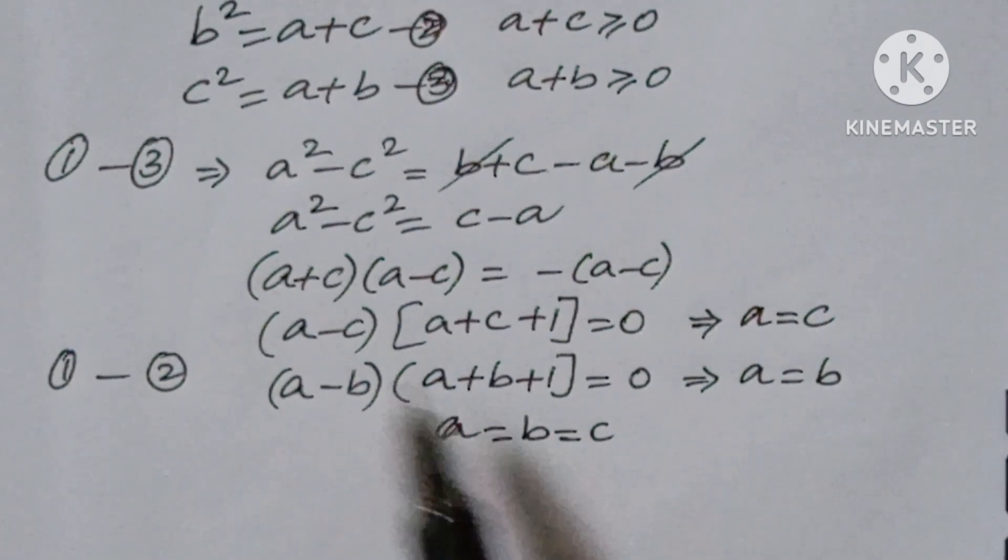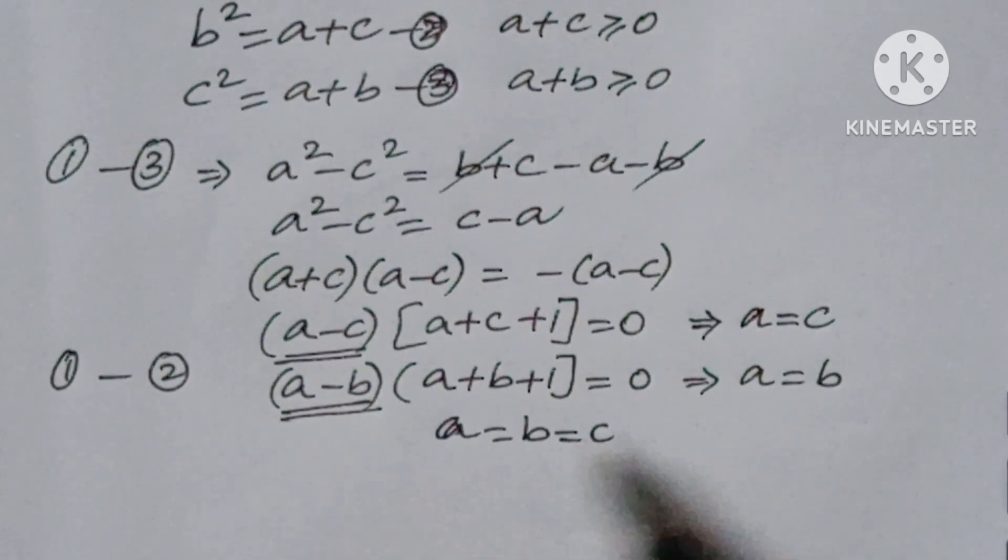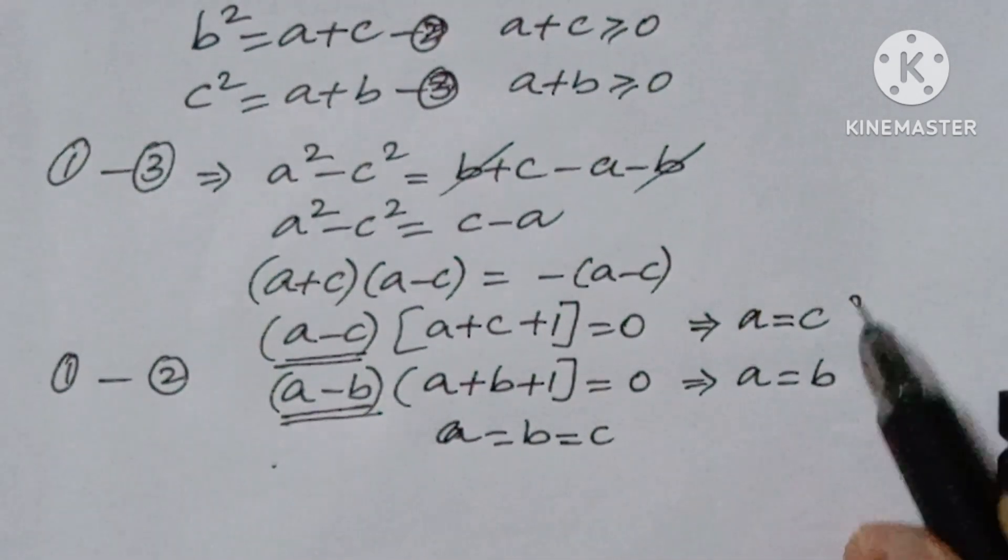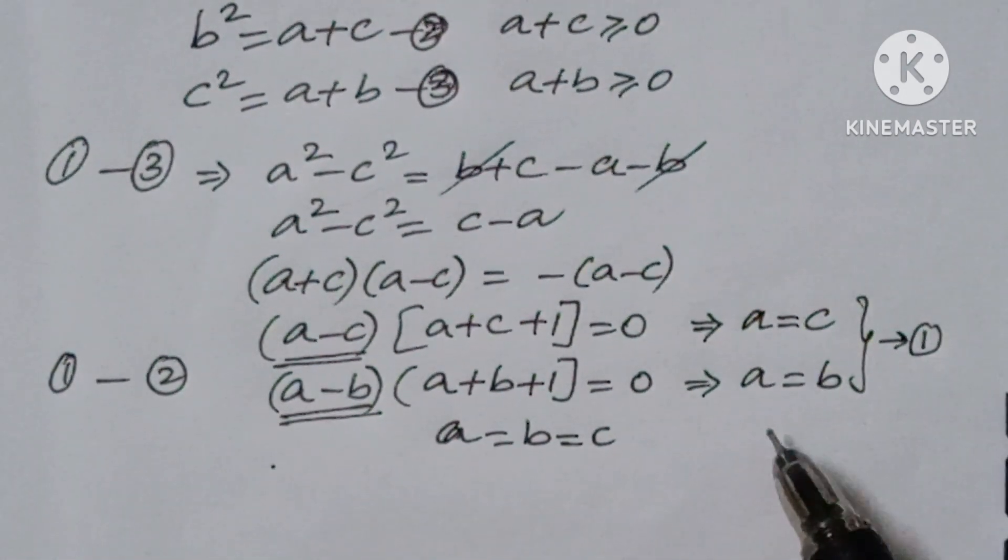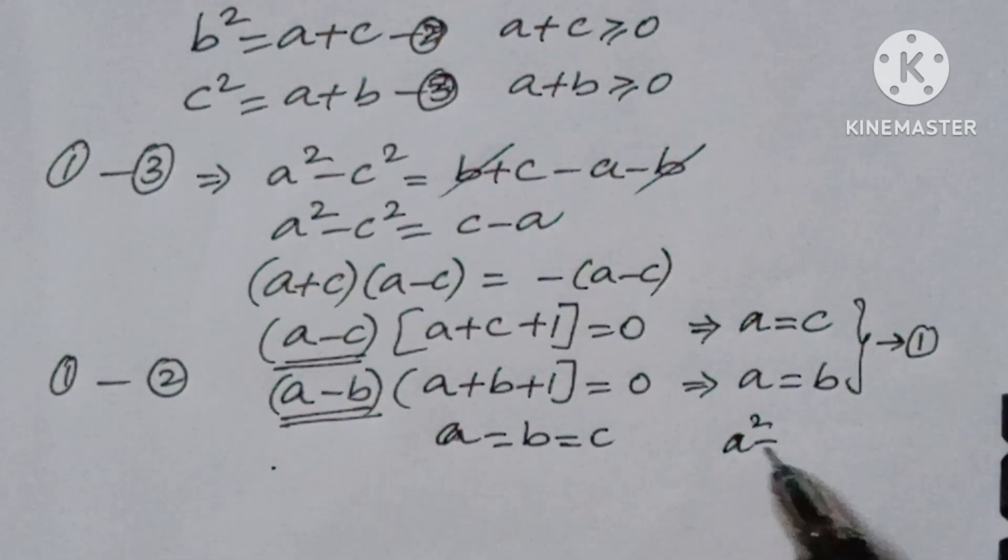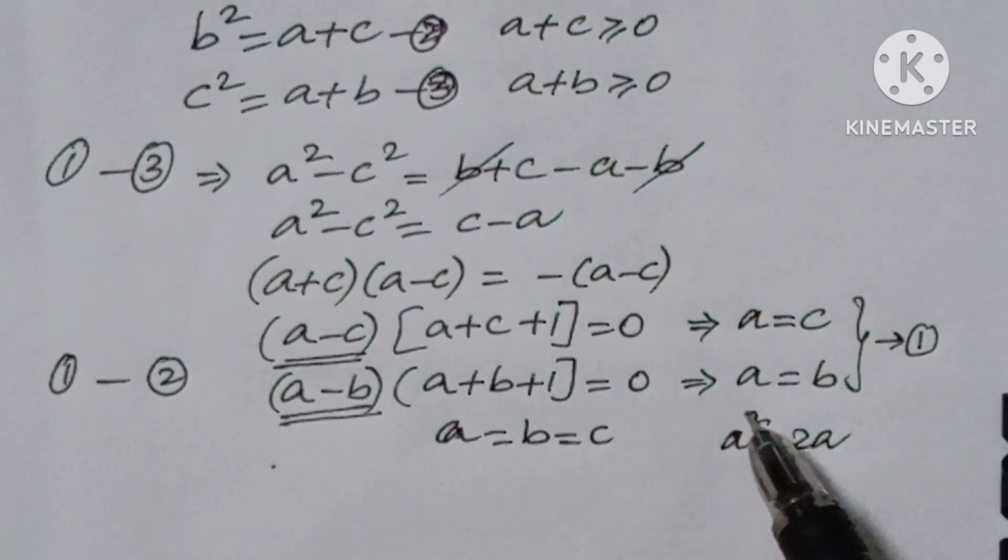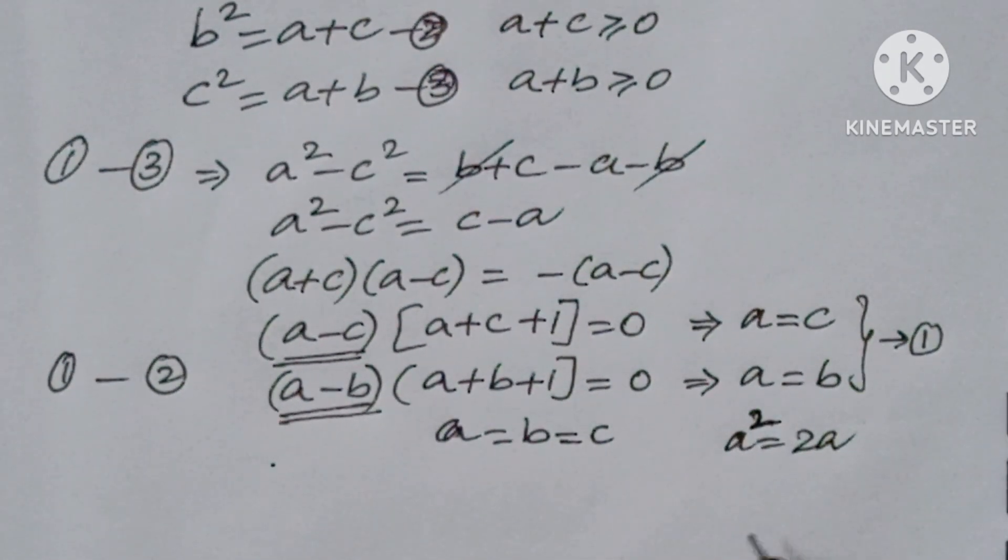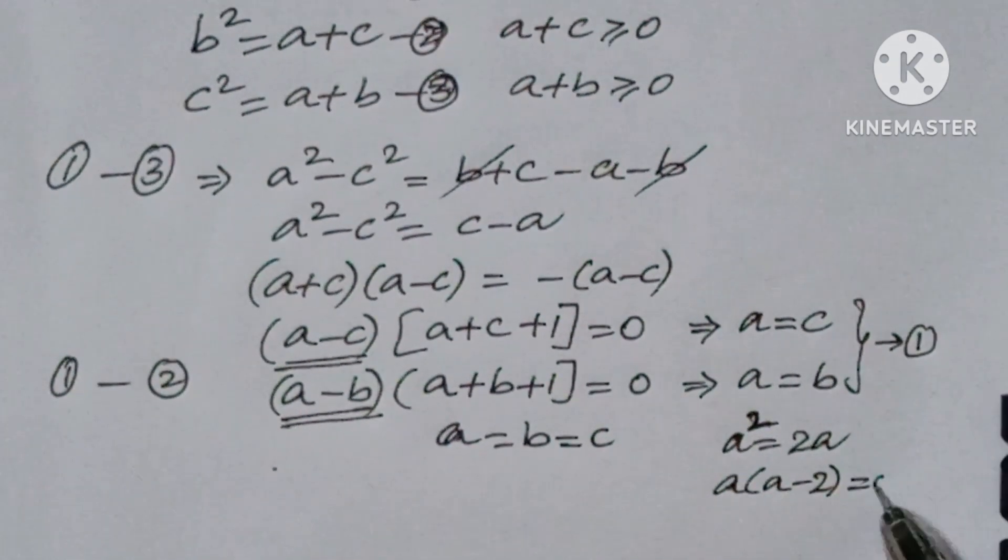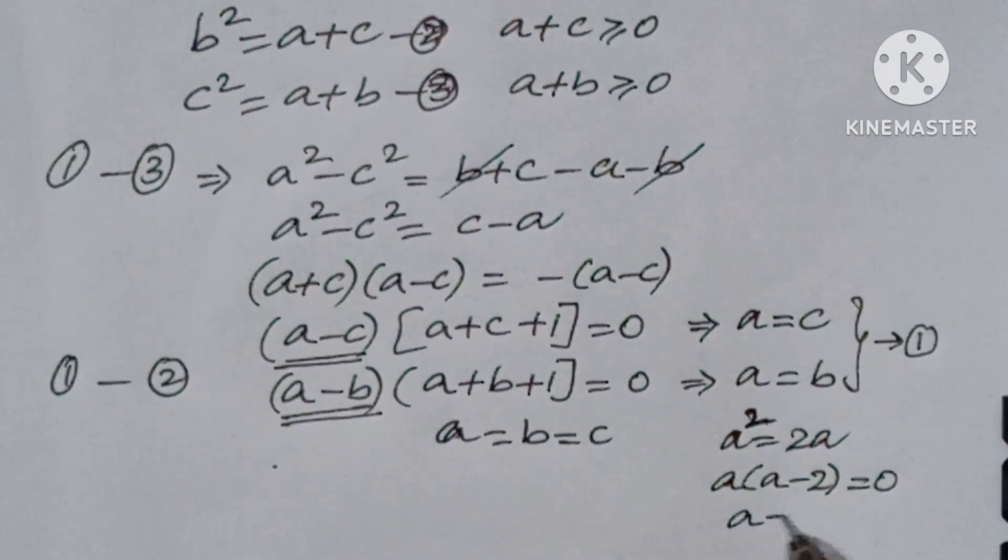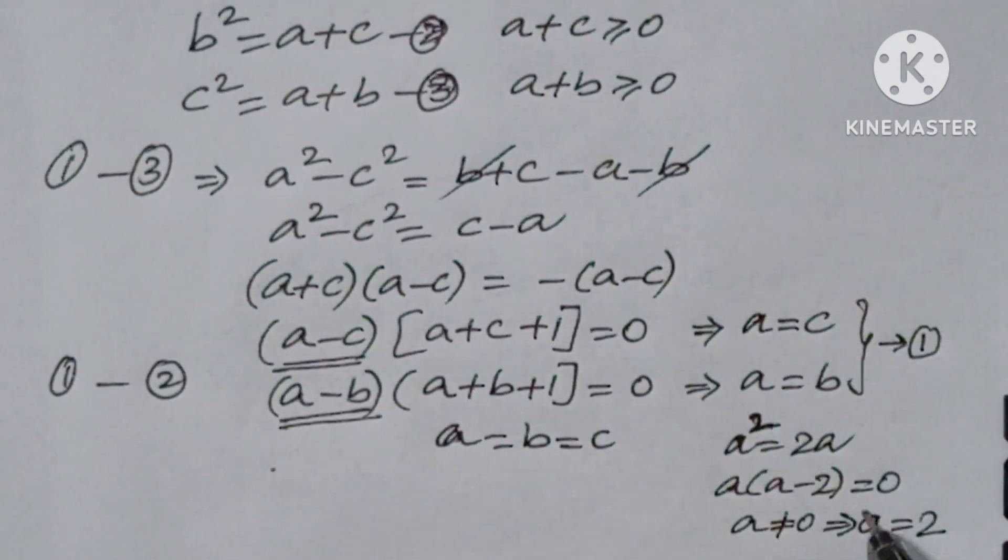Now replace this value in equation 1. So here what you will get: a² is equal to 2a. If you replace these values in 1, a² is equal to 2a. So this can be written as a(a-2) equal to 0. a cannot be 0, that implies a value is 2.